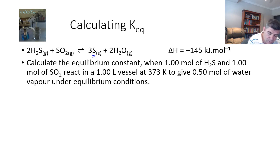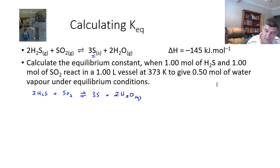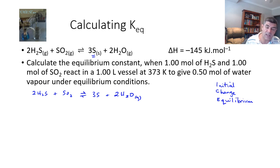We want to first write the equation again, mainly because we're interested in the mole ratios — that's going to be fairly important. When calculating the equilibrium constant, we use a method often referred to as the ICE method. ICE stands for Initial, Change, and Equilibrium. This is a useful method when you need to calculate the concentrations of different substances at equilibrium.